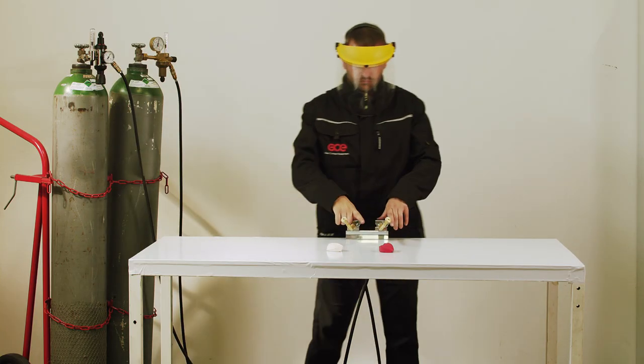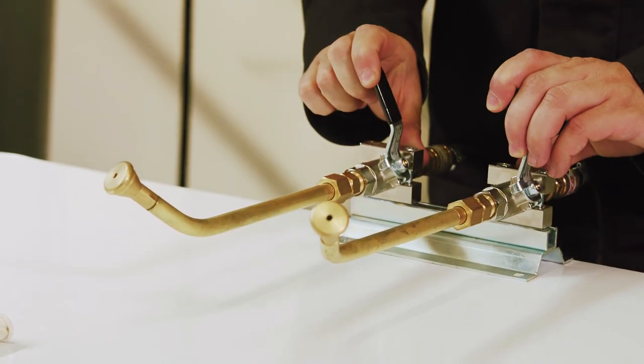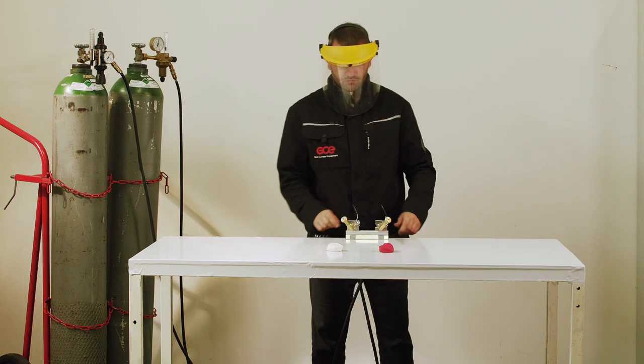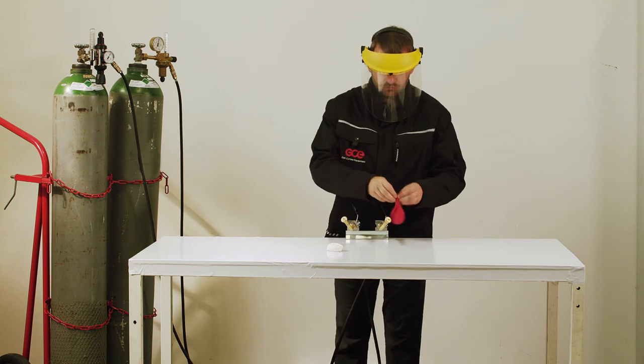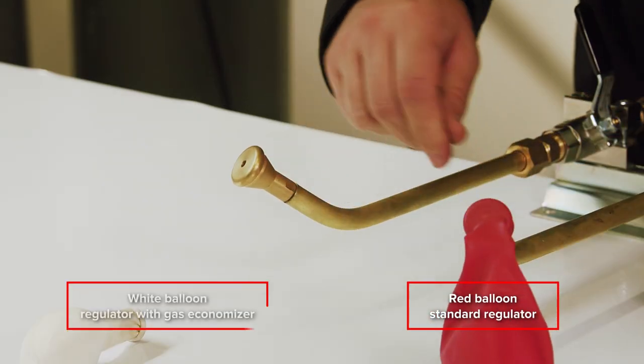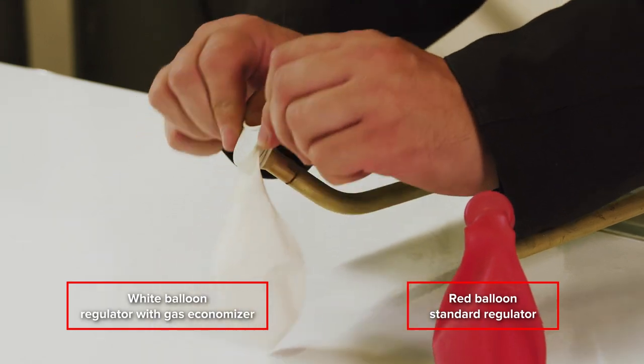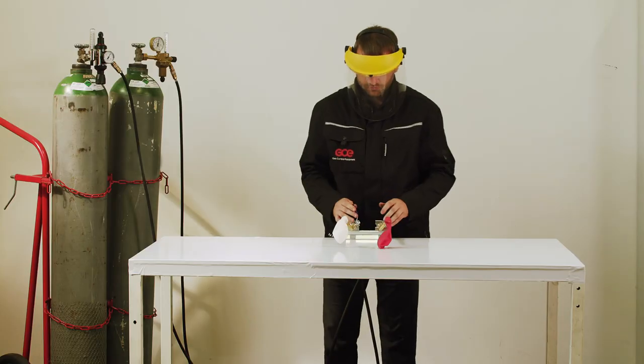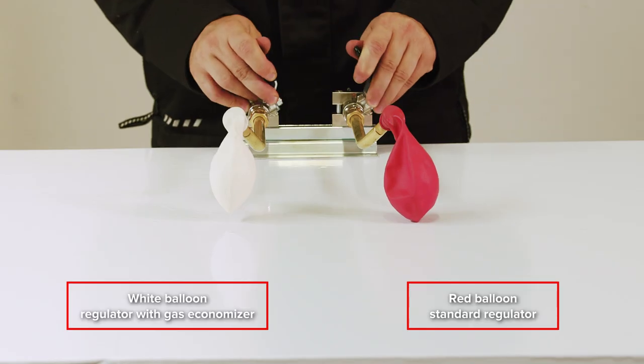The ball valve will work for us as a substitute for the welding torch. In this case, we will simulate the supply of gas to the weld using a balloon.